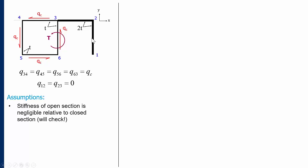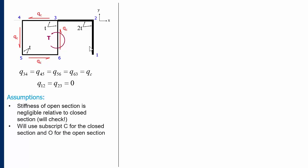Similarly, because we are neglecting anything occurring in the open section, q12 and q23 are equal to zero. Even if there was torsion carried by the open section, the shear stress distribution for torsion in an open section is different — it doesn't produce a shear flow; the average shear flow would be zero, although it does generate shear stresses. We'll use subscript c for the closed section and o for the open section to keep our equations clean.